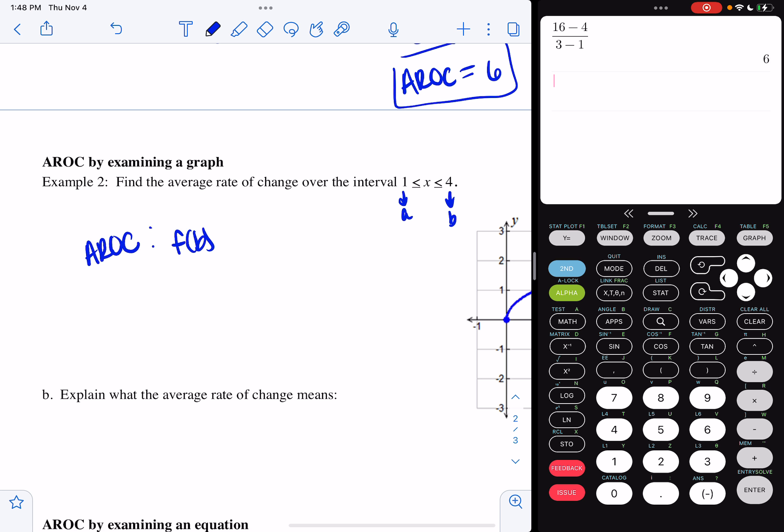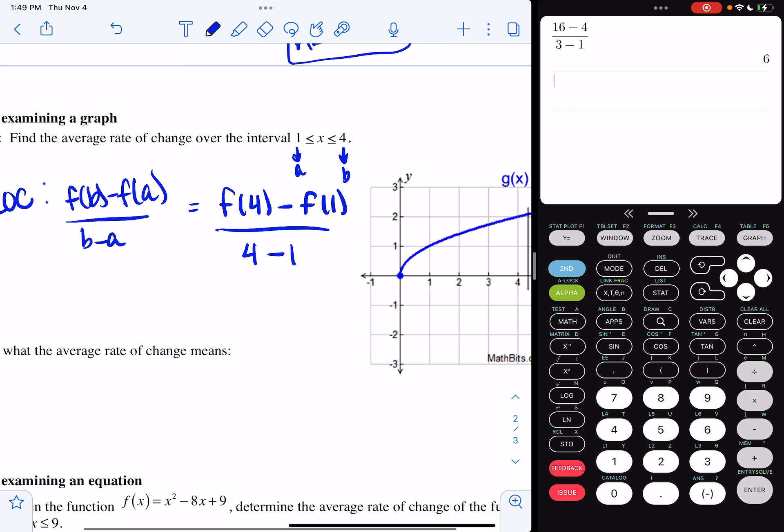Which is f of b minus f of a over b minus a. If I look, my b value is 4, so I'm going to do f of 4 minus f of 1 over 4 minus 1. One of the things that we forgot to mention is that this value will match up with this value. So basically, we need to make sure that our 4 is over our 4 and our 1 is over our 1.